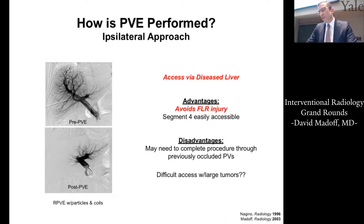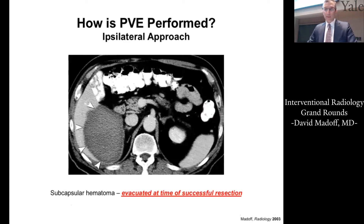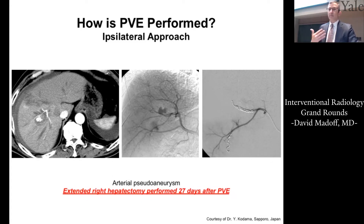The ipsilateral approach accesses the diseased liver rather than the future liver remnant, which is the main advantage — it avoids FLR injury. There are some disadvantages: you may need to complete the procedure through previously occluded portal veins, and with massive tumors involving almost the entire right lobe it may not be feasible. We published a paper showing a hematoma that occurred during the ipsilateral approach that was simply evacuated at the time of resection, and the patient fortunately still had their surgery — demonstrating the rationale for the ipsilateral approach.